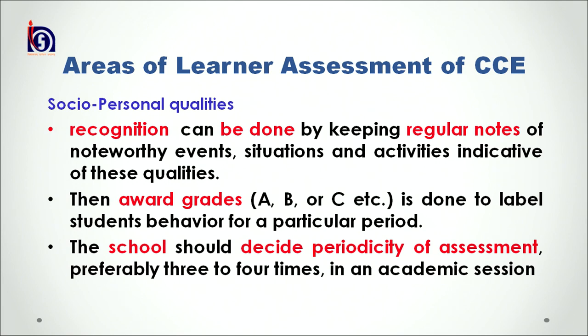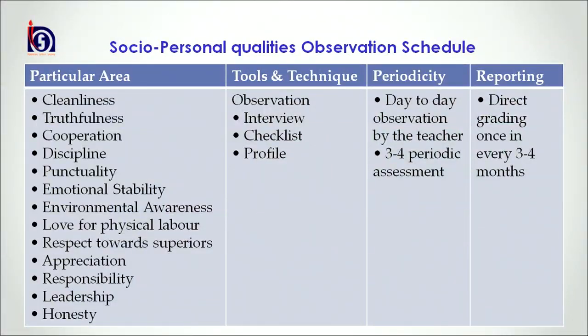The school should decide the periodicity of assessment of SPQs — preferably three to four times in an academic session. An observation schedule on socio-personal qualities may include areas such as cleanliness, truthfulness, cooperation, discipline, punctuality, emotional stability, environmental awareness, love for physical labor, respect towards superiors, appreciation, responsibility, leadership, and honesty. Tools and techniques that can be used include observation, interview, checklist, and profile. The periodicity could be day-to-day observation by the teacher with three to four periodic assessments, and reporting can be in the form of direct grading once every three to four months.